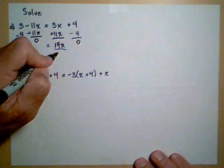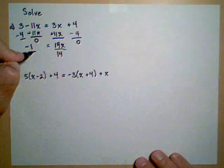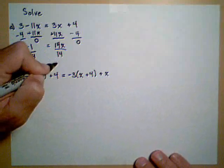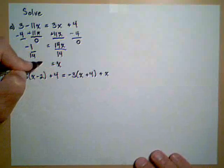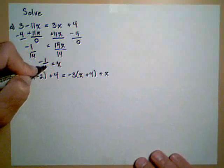So we have negative 1 equals 14x. Last step in solving, divide both sides by 14. And we have x equals negative 1 over 14.